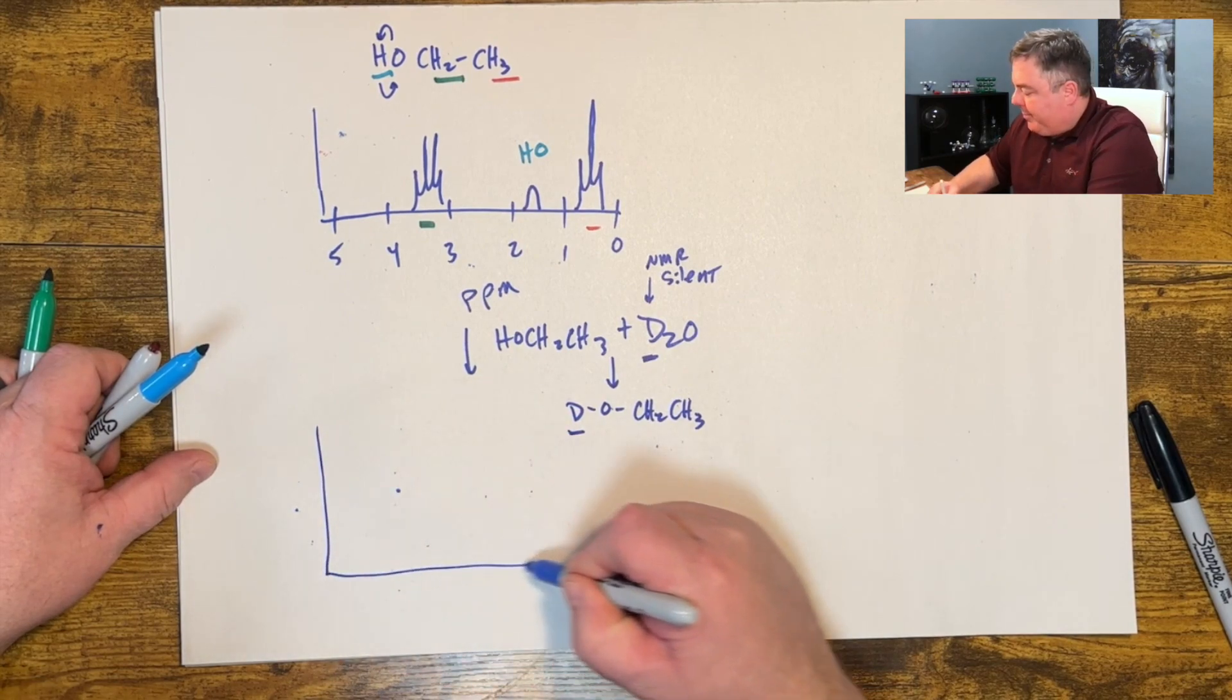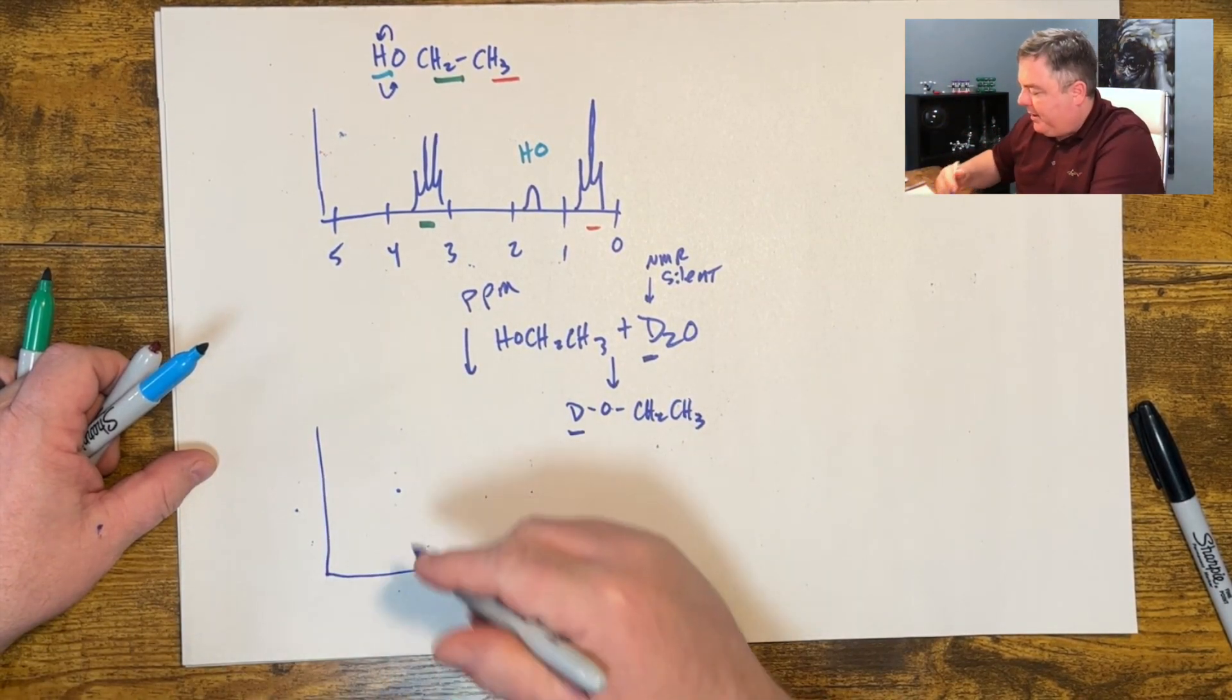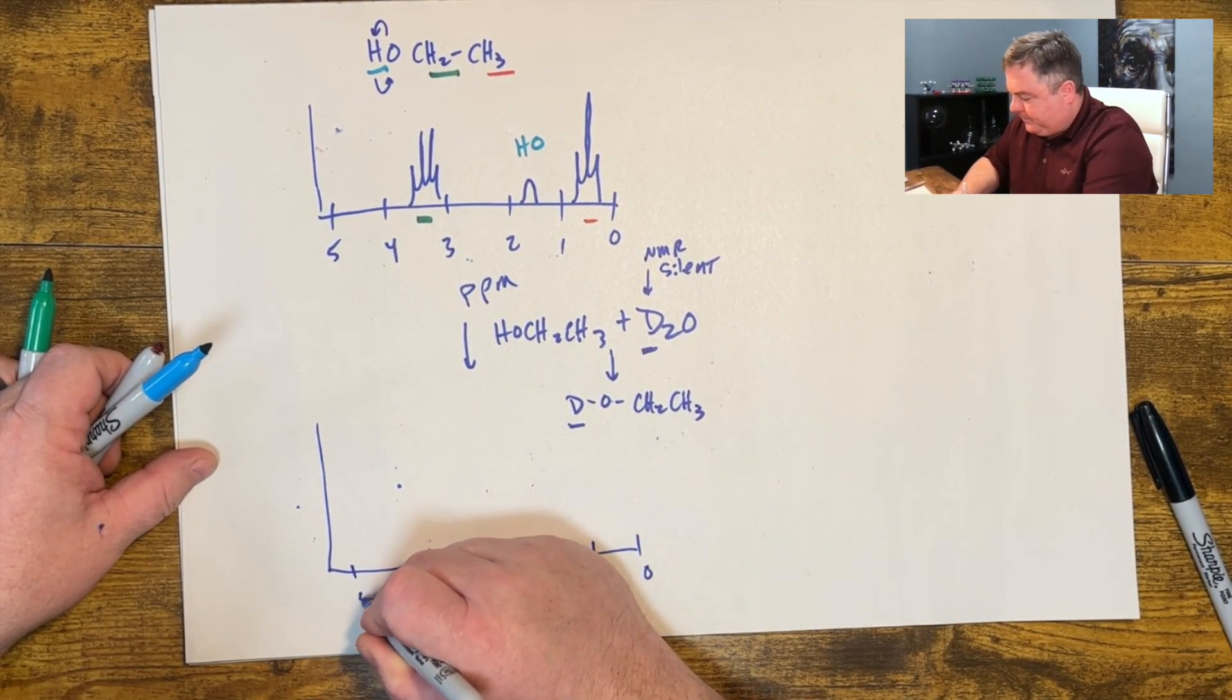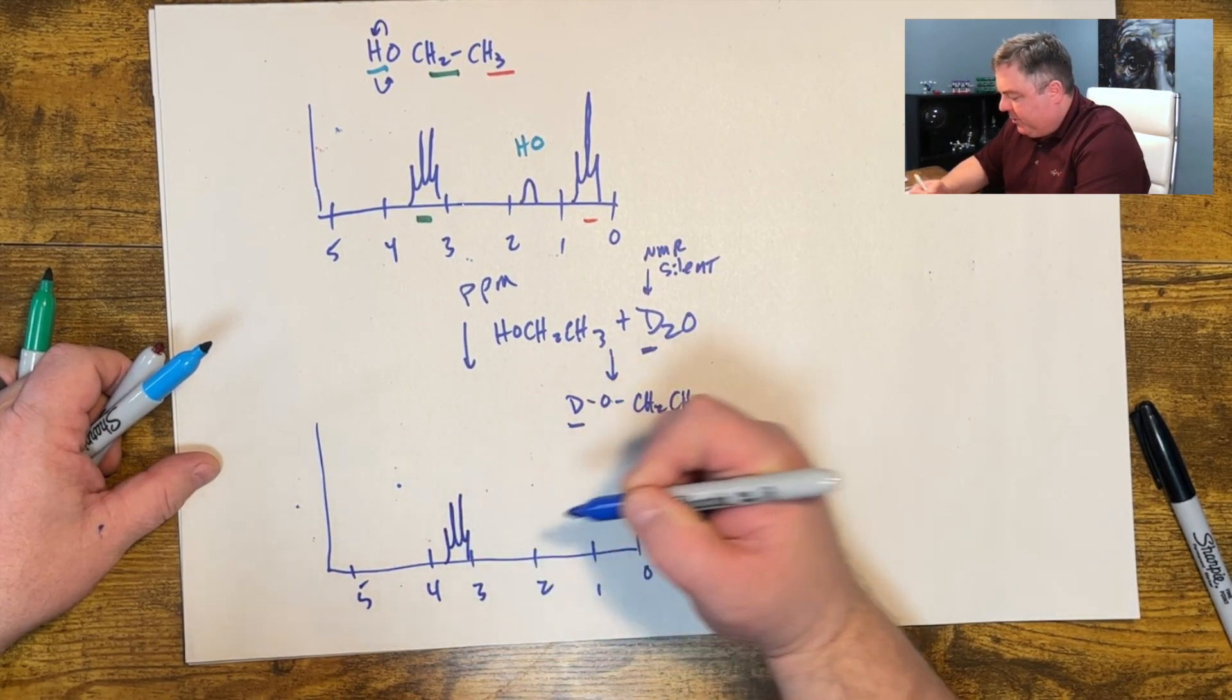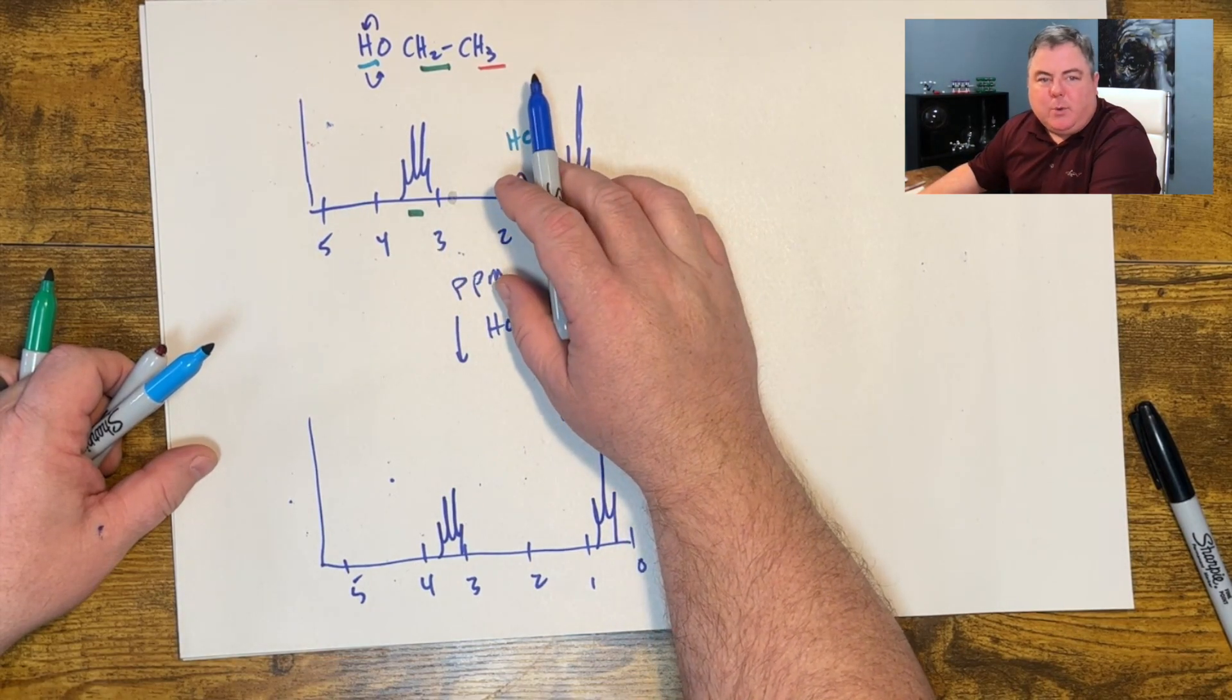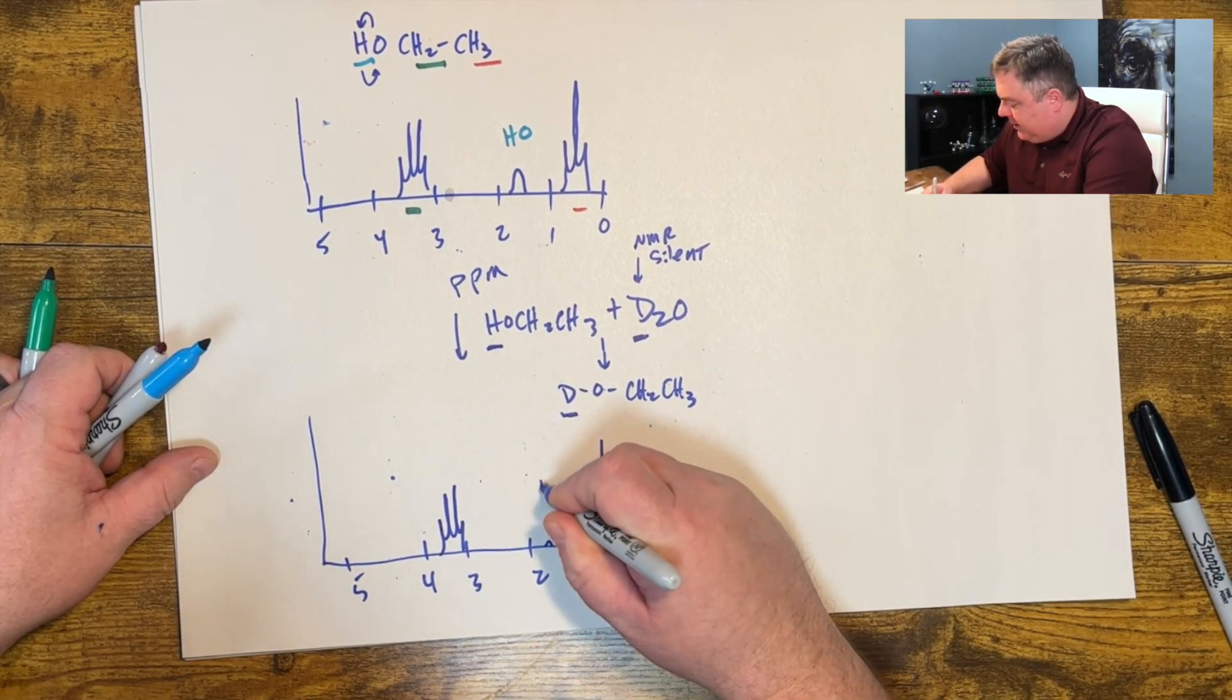So this is what would happen to that NMR spectrum. You run an NMR, you take the tube out, you put a little D2O in it, a couple drops, you shake it up and you rerun it. Now you still have your quartet in the exact same location, you still have your triplet in the exact same location. Those hydrogens on the carbons won't move.